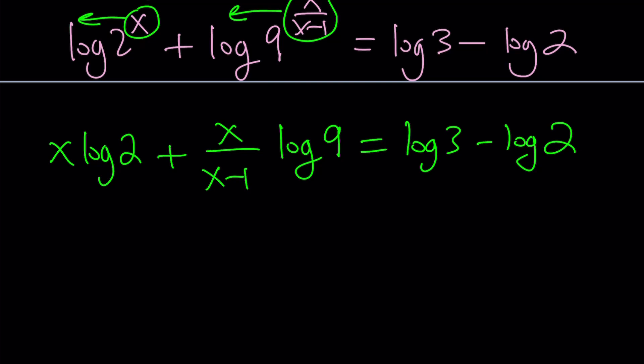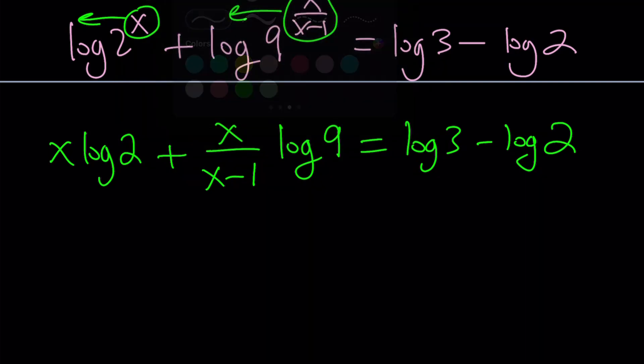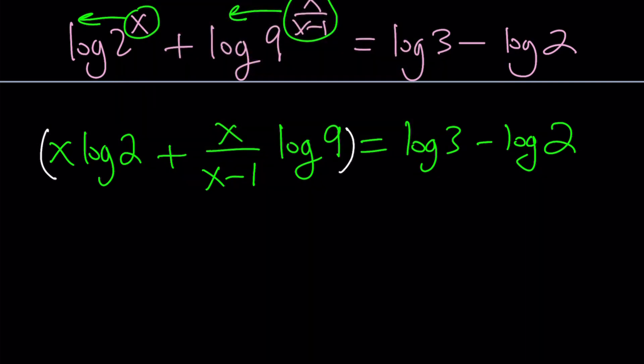Now what am I supposed to do? Here I have an x minus 1 at the bottom. I don't like that. So let's go ahead and multiply everything by x minus 1 so we can get rid of the fractions. Because fractions are annoying, right?